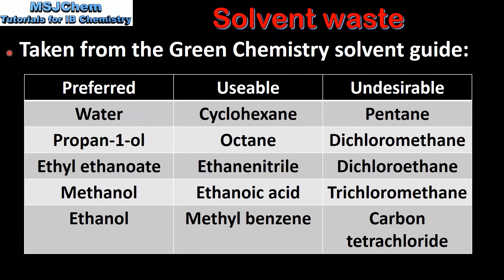The following information is taken from the Green Chemistry Solvent Guide. In this table we have a list of preferred solvents, usable solvents and undesirable solvents. Preferred solvents include water, propan-1-ol, ethyl ethanoate, methanol and ethanol. Examples of usable solvents include cyclohexane, octane, ethane nitrile, ethanoic acid and methylbenzene.